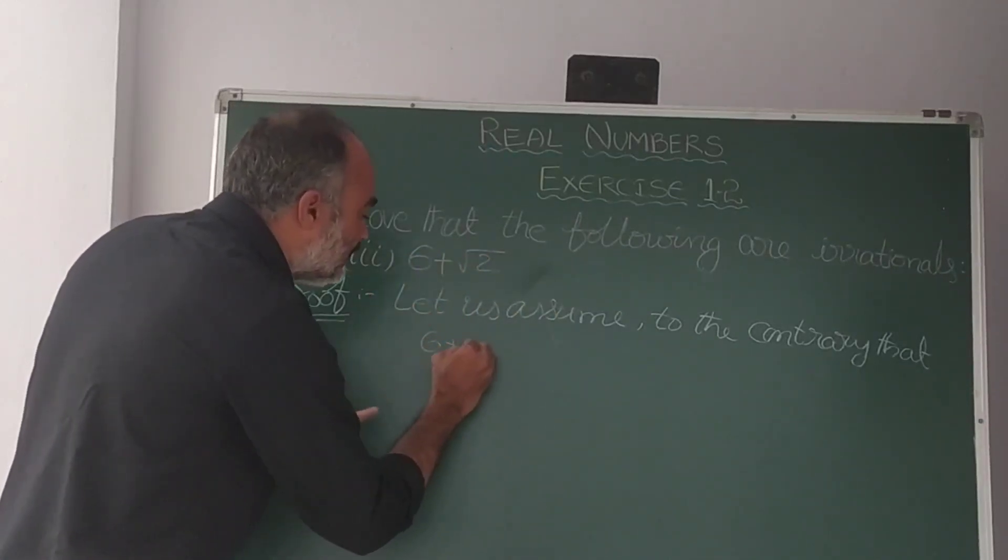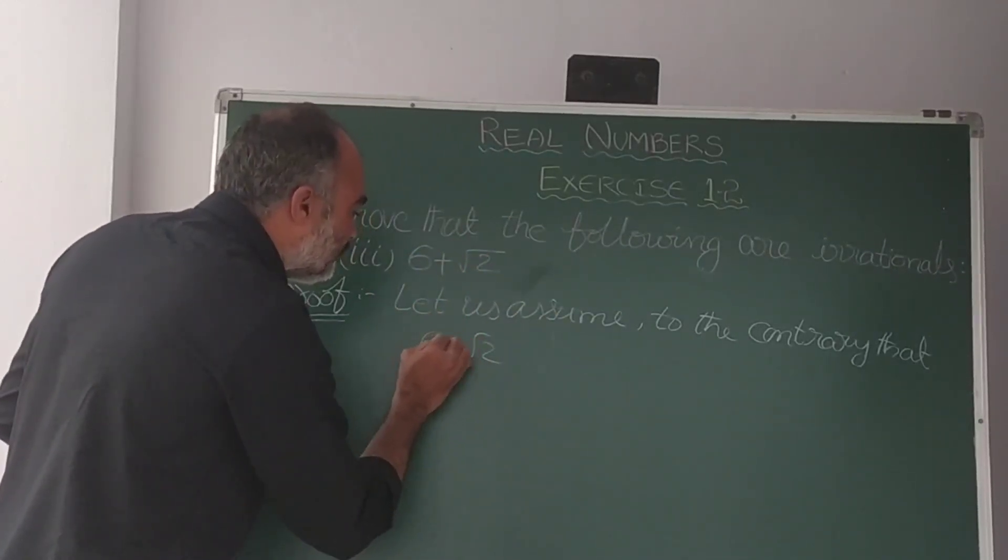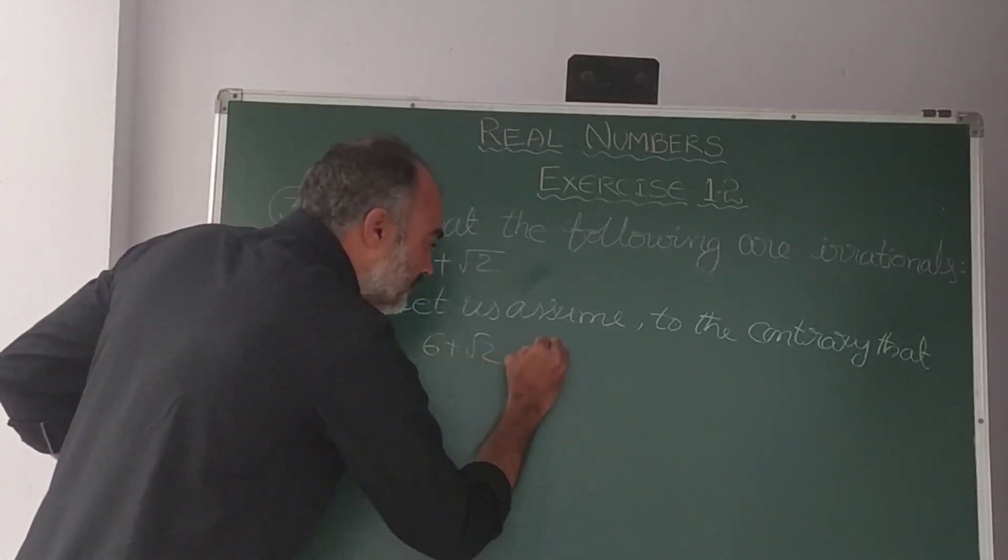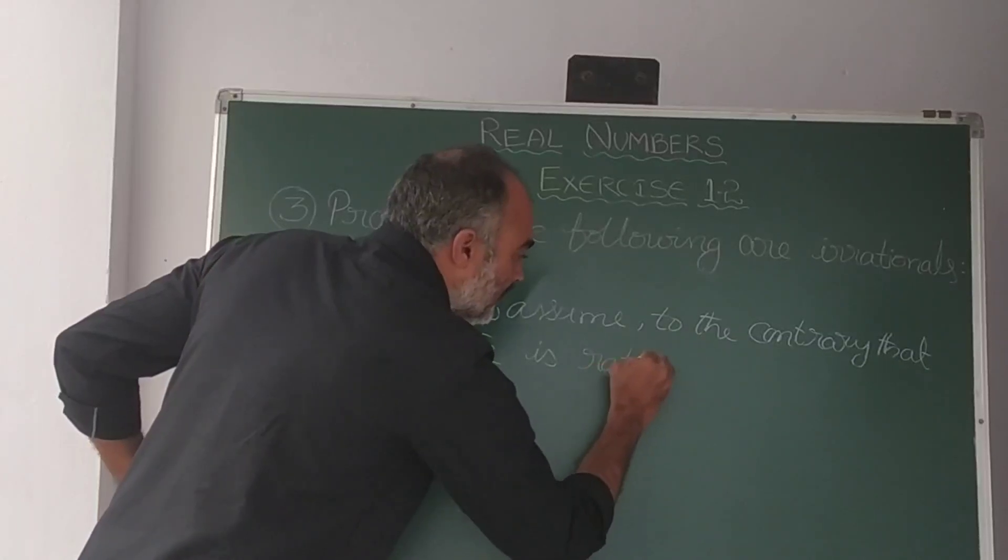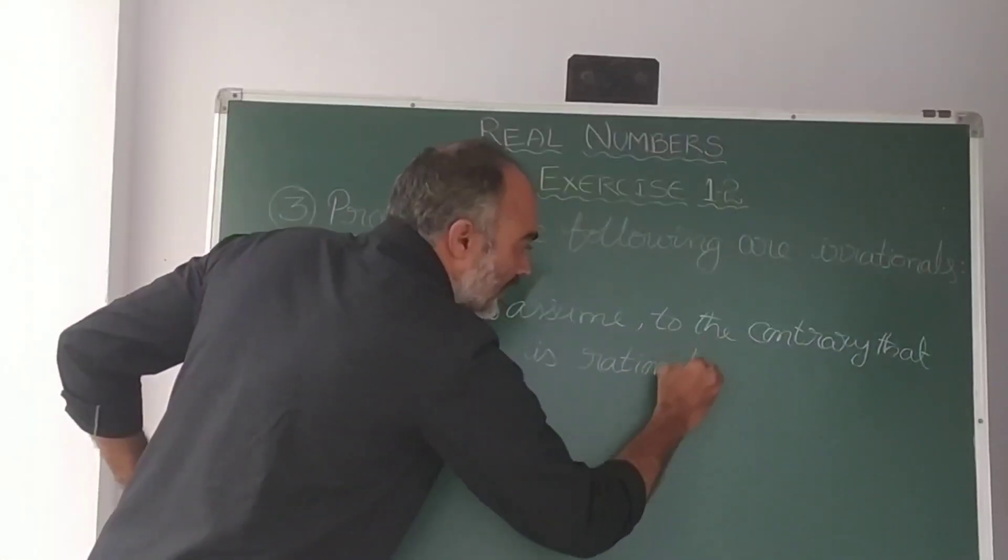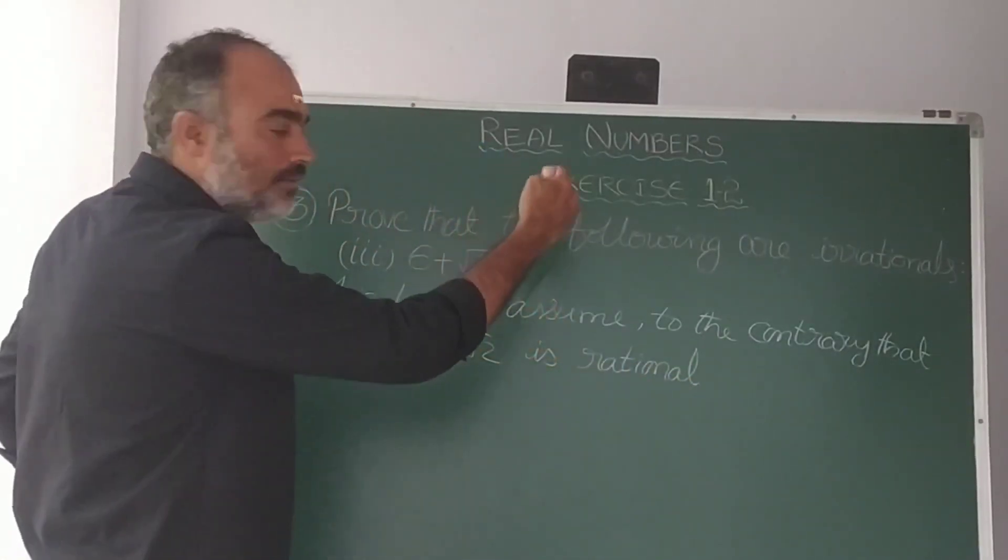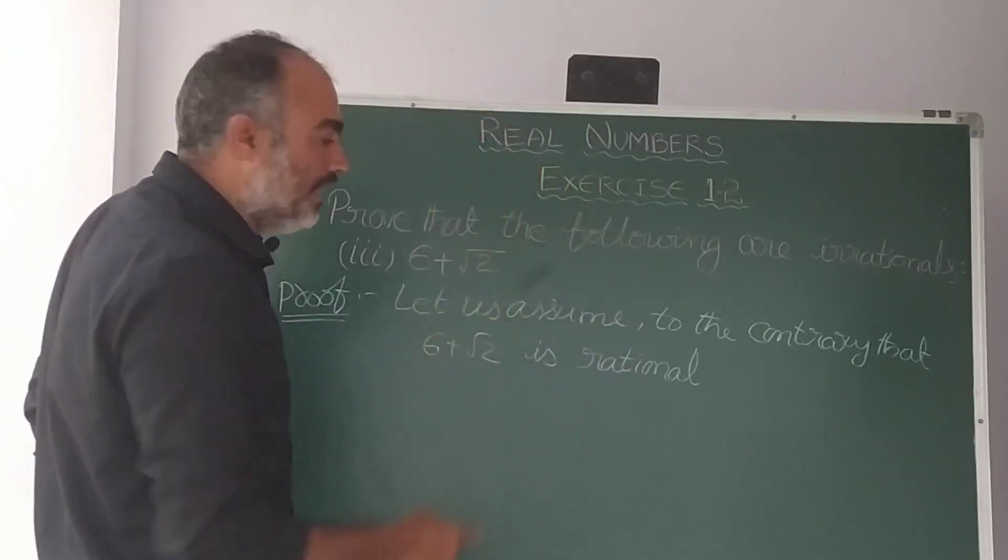How can we explain the equation? 6 plus root 2 is... If you prove it, we are irrational and rational. The only way we have to give this is rational. The only way we are to give this is rational. This is rational.